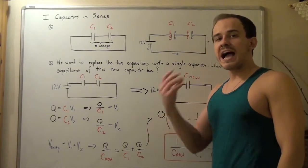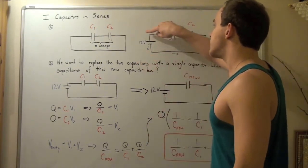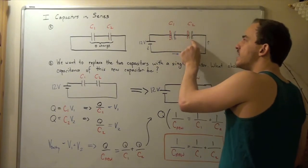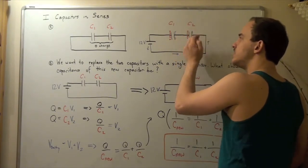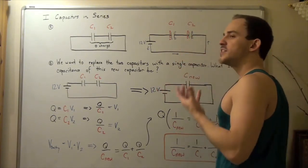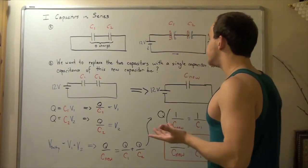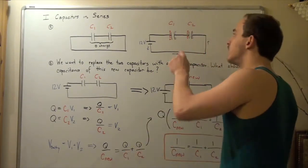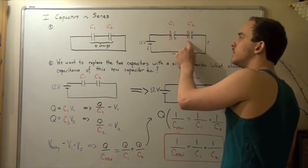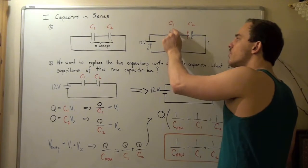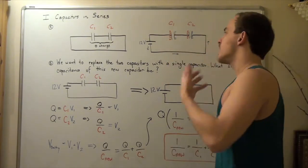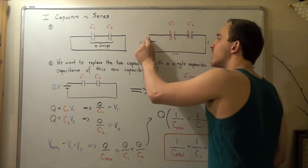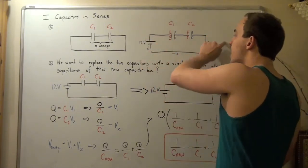Let's examine more closely how our electrons flow from one end to the other. They begin at the anode and move along the path until they reach the first plate. At this plate, they can't jump across because there is a dielectric between the two plates, so electrons begin accumulating on this side. This accumulation of negative charge creates repulsion, which repels electrons on the other side of the plate, causing them to move along the wire to the next parallel plate, and then on to the cathode.